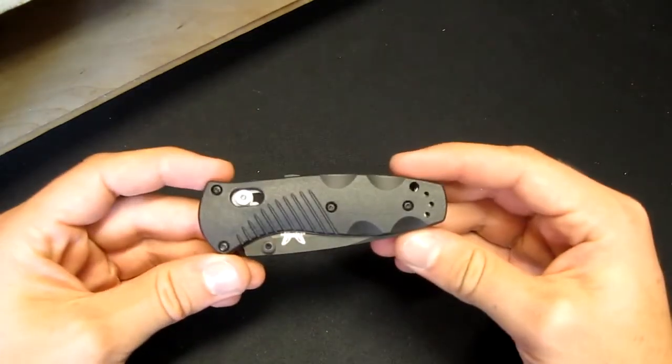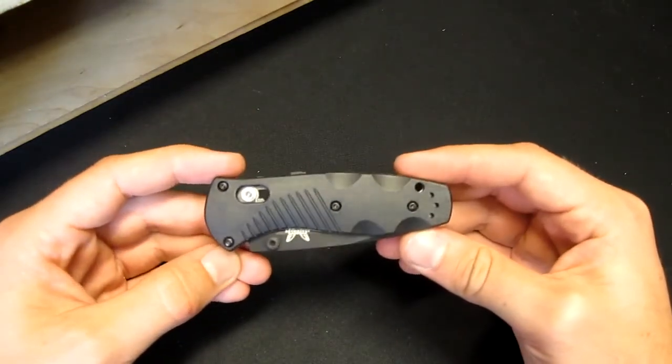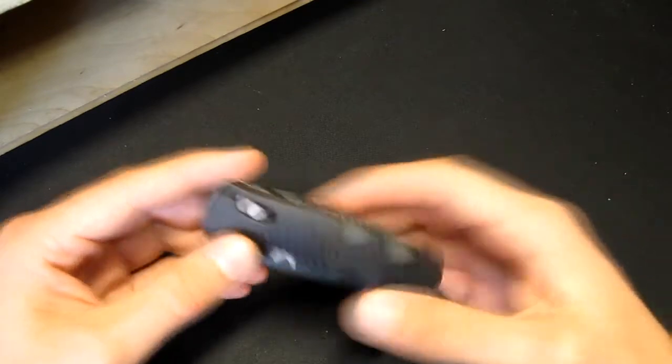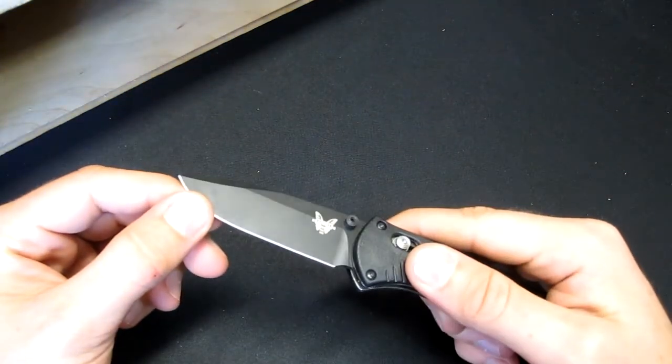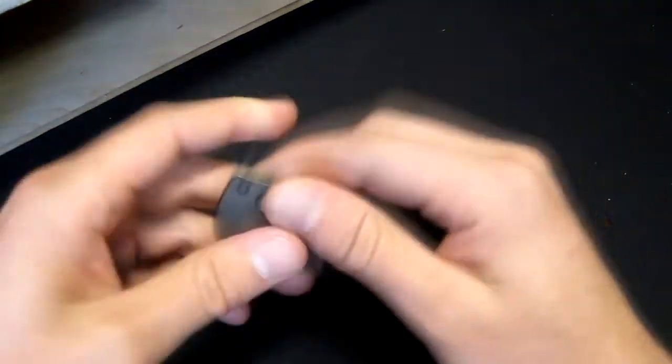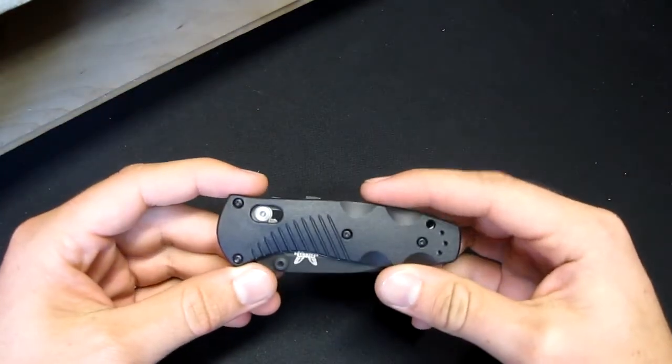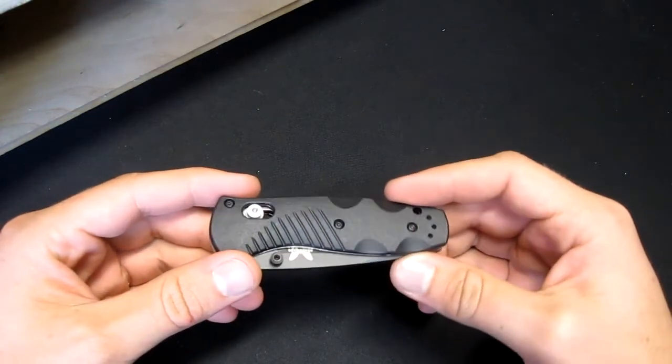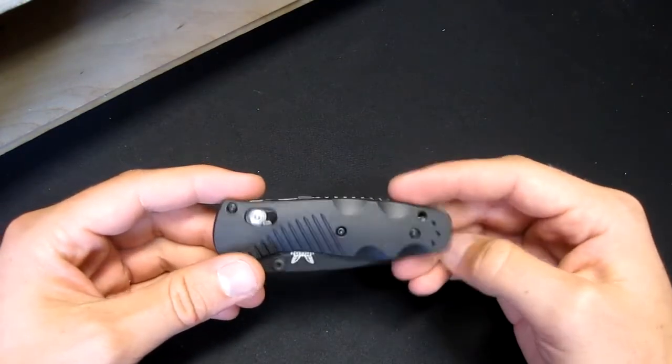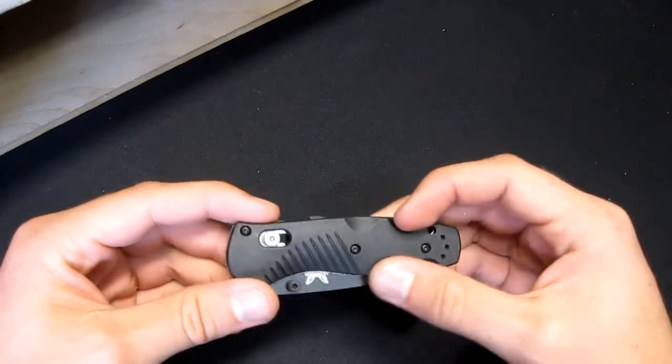Last up, knife. This is a Benchmade 585 Mini Barrage, or 585BK. As you can see it's got the coating on the blade. I just wanted a knife for EDC and opening packages I guess, which you don't need to buy this kind of knife to open packages, but I wanted to. I've wanted a knife for a while.